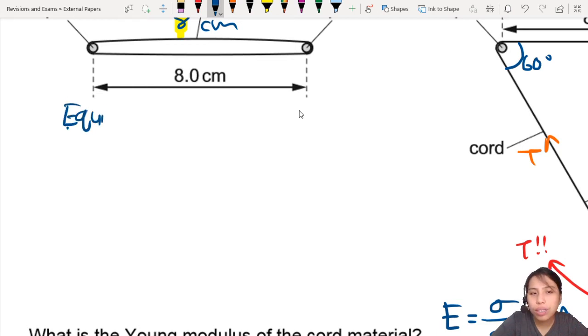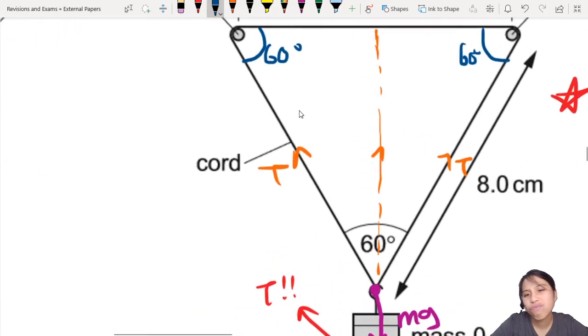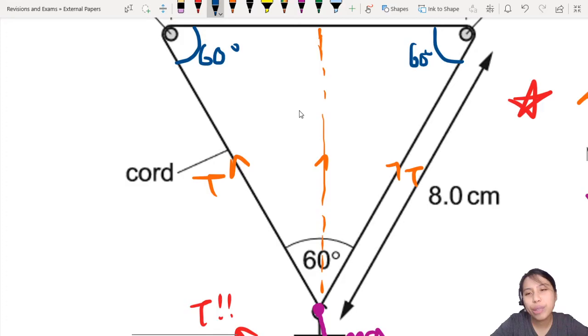The next question is, what is Ty? Can we look at this thing a little bit? Can we redraw this triangle? Yes, we can. If we want to find Ty, you need to resolve the component of T into its vertical component.